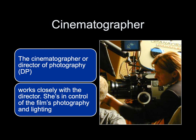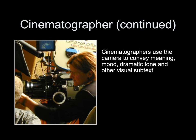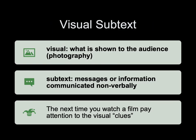The cinematographer, or director of photography, often abbreviated DP, works closely with the director and is in control of the film's photography and lighting. Cinematographers use the camera to convey meaning, mood, dramatic tone, and other visual subtext. Visual refers to what is shown to the audience; subtext refers to messages or information communicated non-verbally. Next time you watch a film, pay attention to the visual clues.